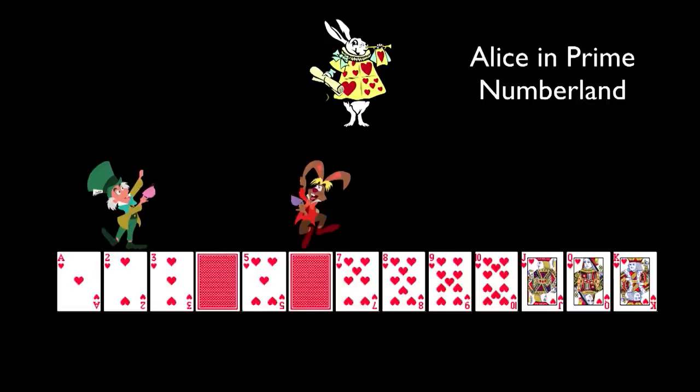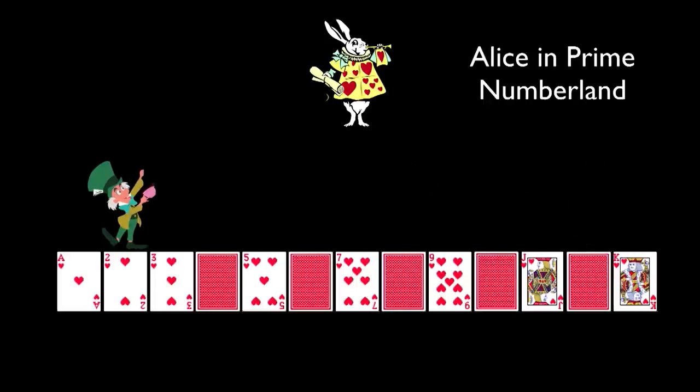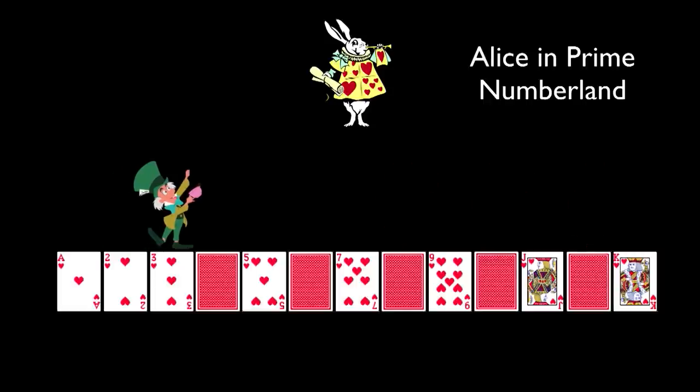And every time he reaches a card, he turns the card over. So like so. And then the factor, the Hatter advances to three, and again, the March Hare multiplies three, turning over the cards as it finds them. So at the end, the remaining cards left are the prime numbers. One, two, three, five, seven, 11, and 13. And that's how that works.